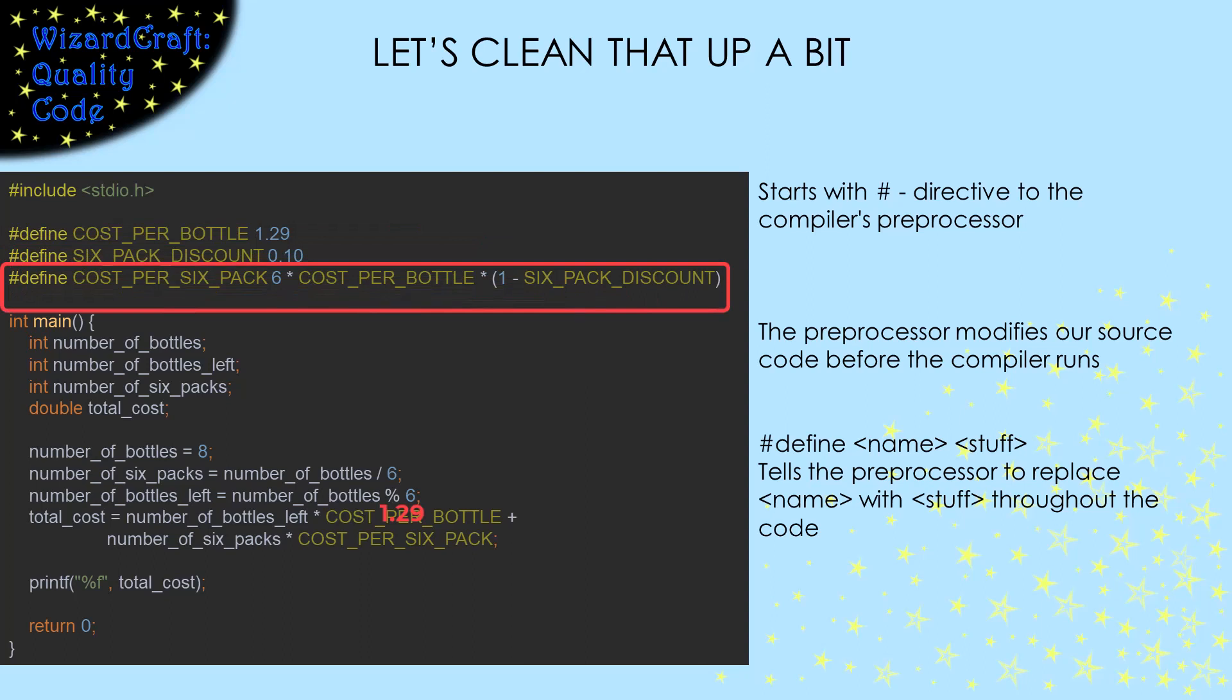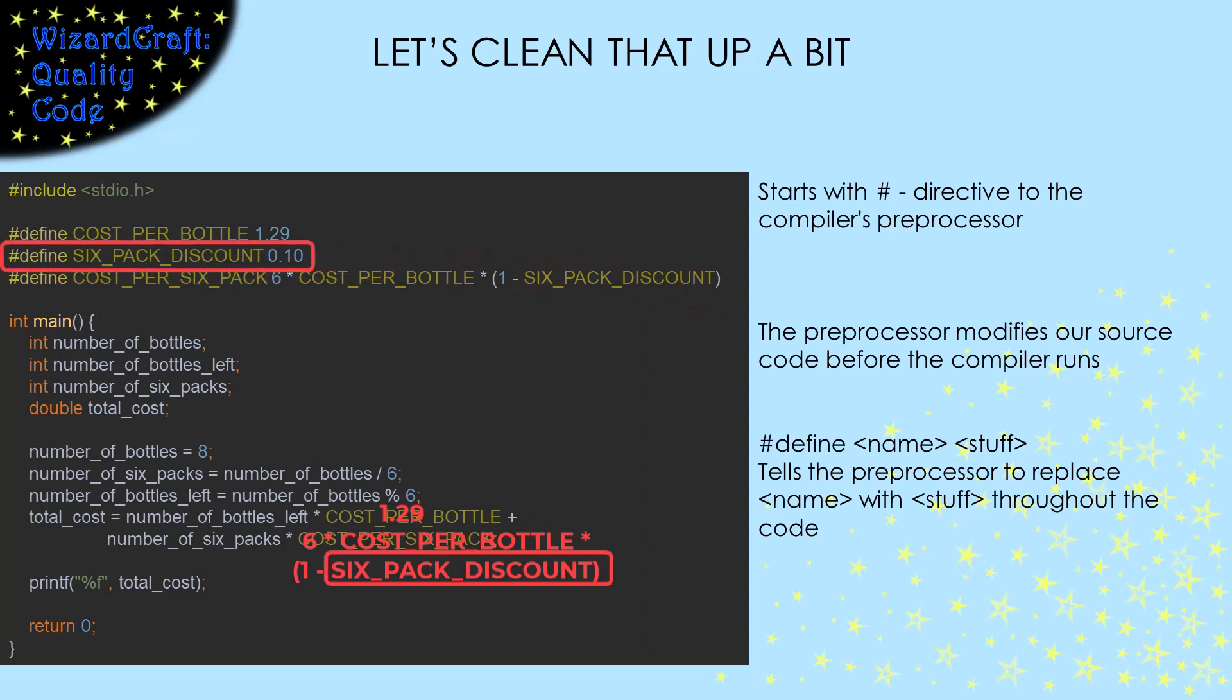We can put more than constants in the stuff part of a pound-define. In this one, we give a formula for the cost of a six-pack. So the compiler would replace cost per six-pack by that entire formula. Then that formula contains six-pack discount, which would be replaced by a tenth, and cost per bottle, that would again be replaced by 1.29.